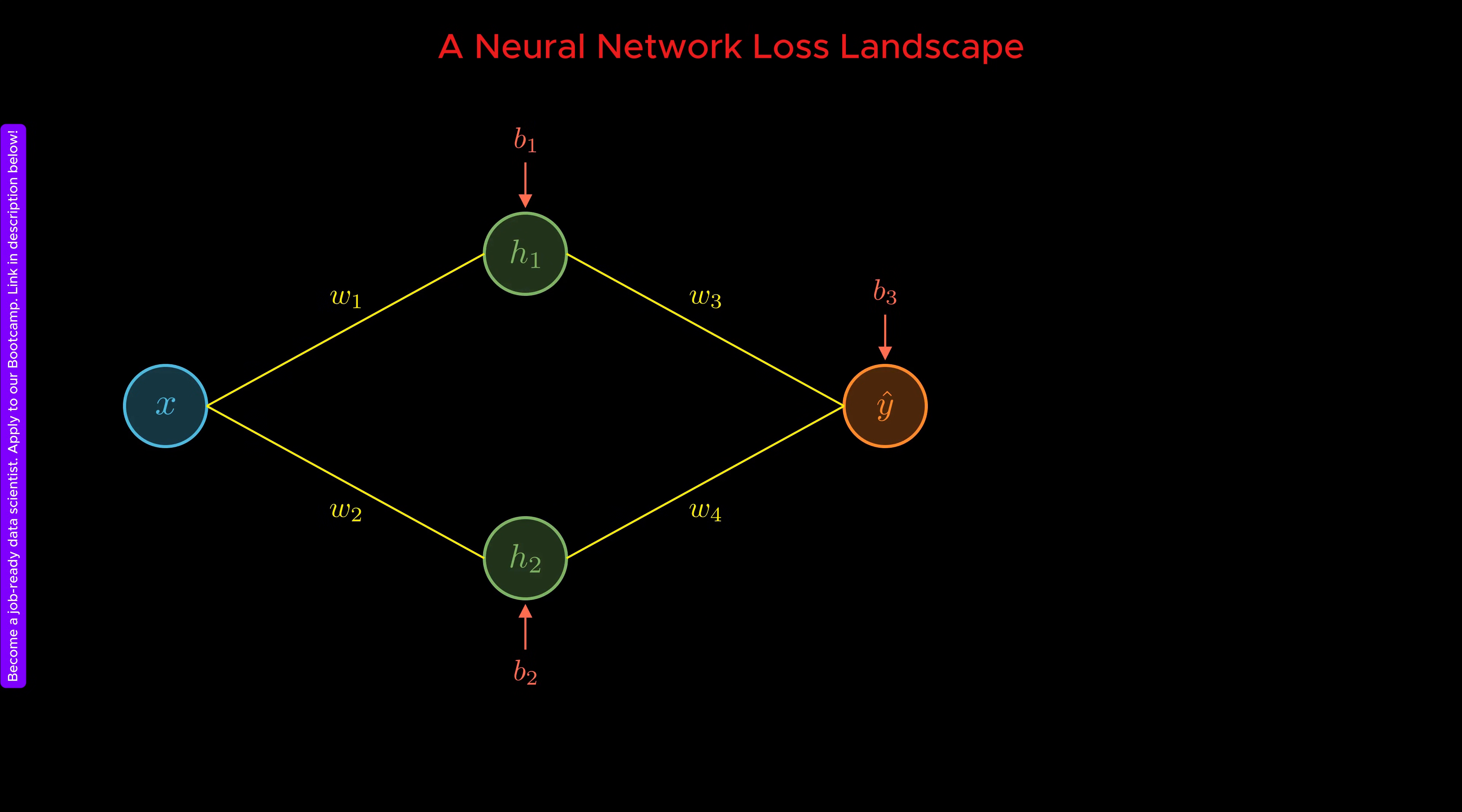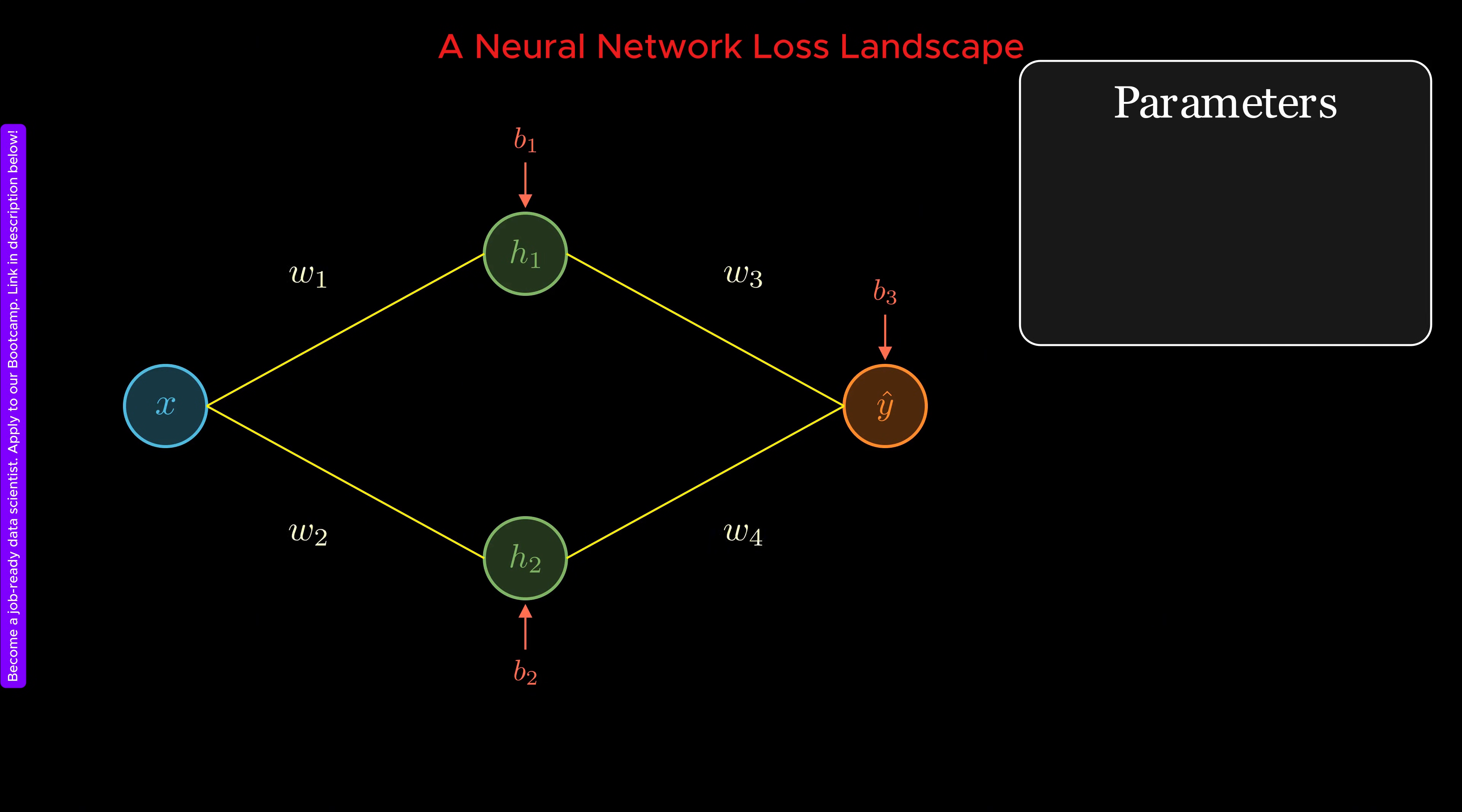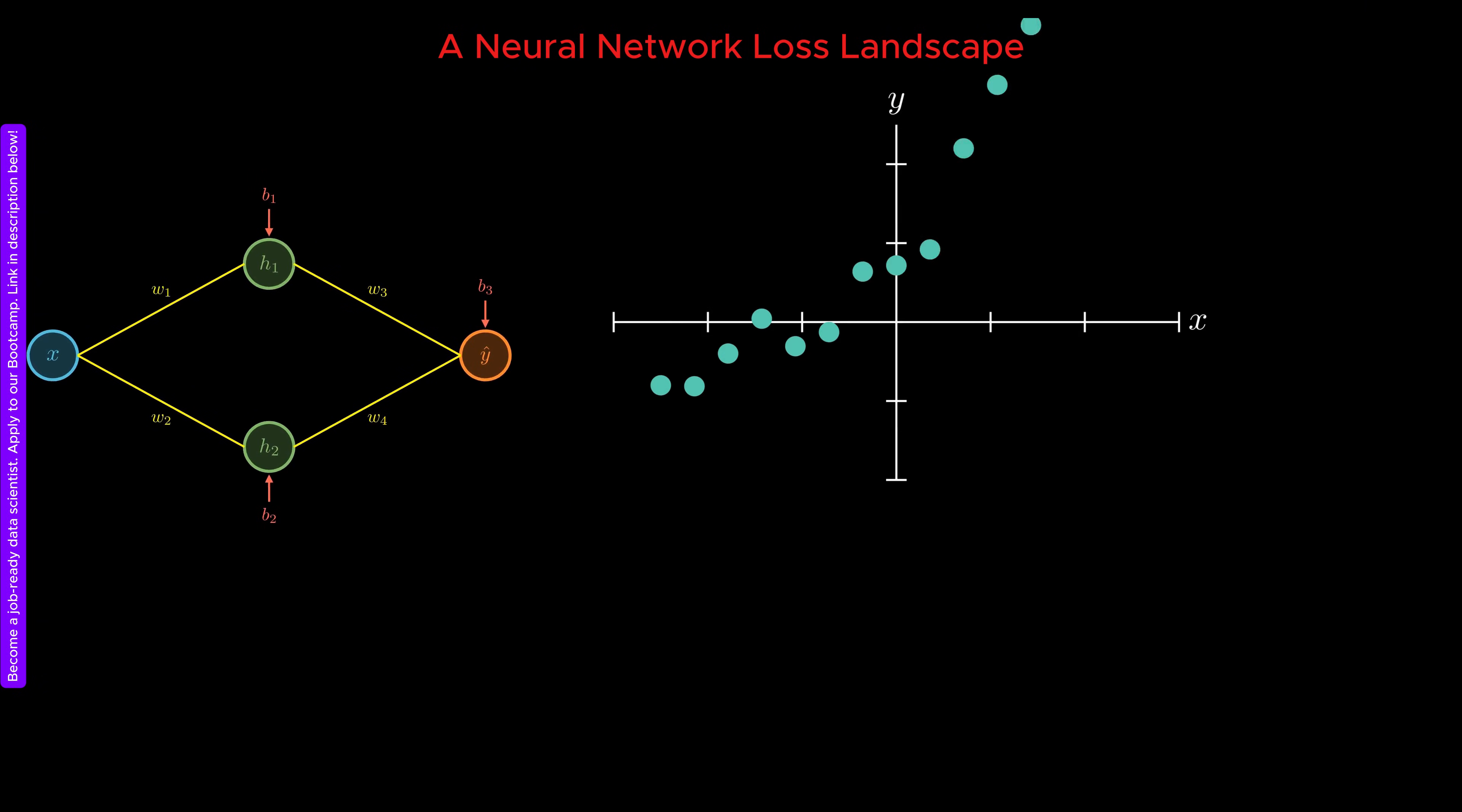When we count all the weights and biases in the model, we find that the loss function depends on seven free parameters. Next, we generate a synthetic dataset and use it to construct the loss function L as a function of these seven parameters.